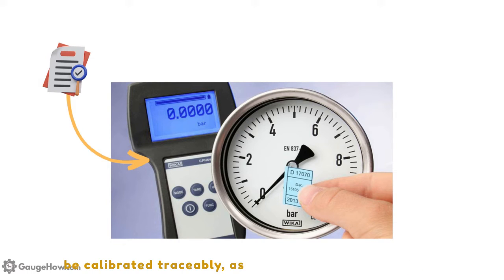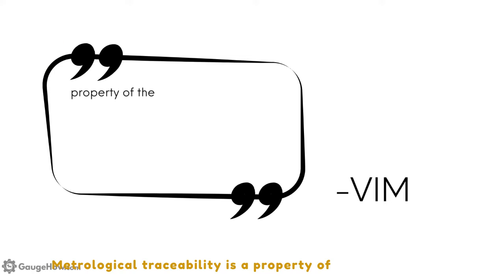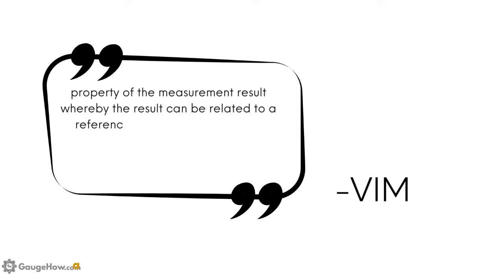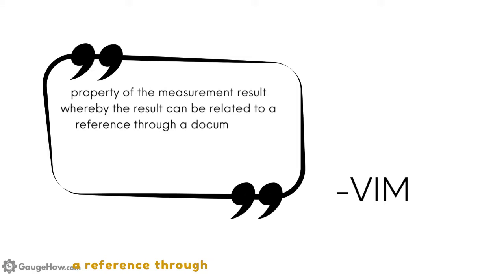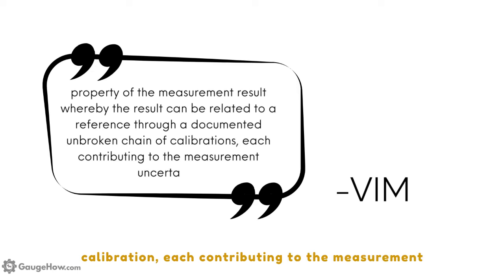As defined by the International Vocabulary of Metrology, or the VIM, metrological traceability is a property of the measurement result whereby the result can be related to a reference through a documented unbroken chain of calibration, each contributing to the measurement uncertainty.